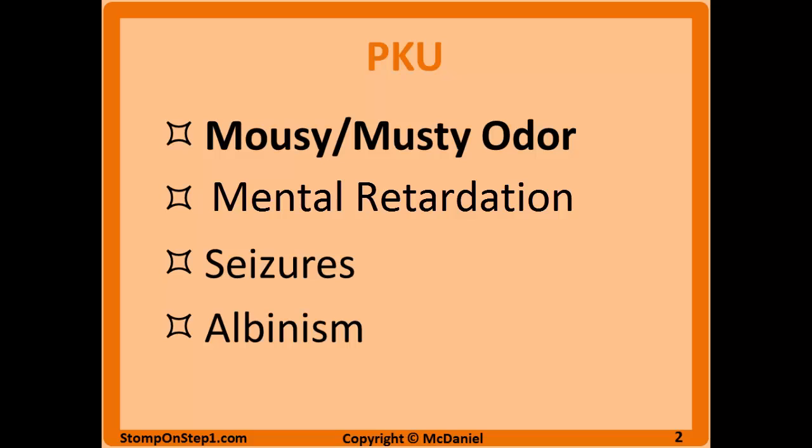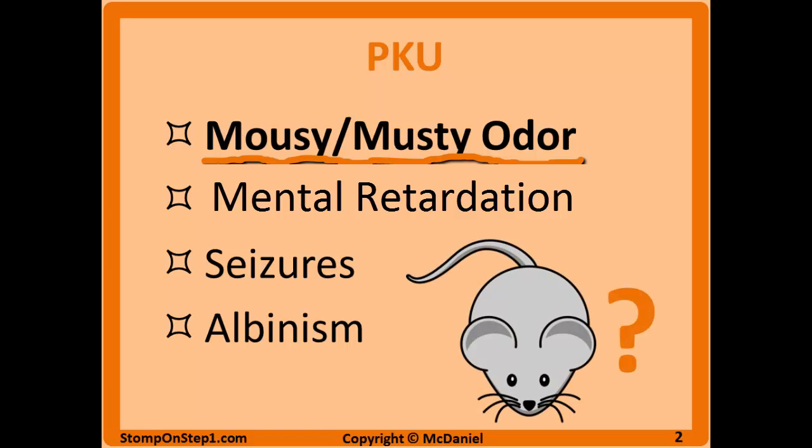Here are some of the most common clinical presentations of PKU. The biggest red flag that screams PKU is a mousy odor — that's the term most often used in these questions. I'm told it means musty or maybe moldy. Thankfully, the USMLE has not yet developed smell-o-vision for their exams, so when you see mousy odor, pick PKU as the answer. You can also have mental retardation, seizures, and albinism. The albinism is because tyrosine is used to create melanin, so if you don't have tyrosine, you're not going to have melanin.